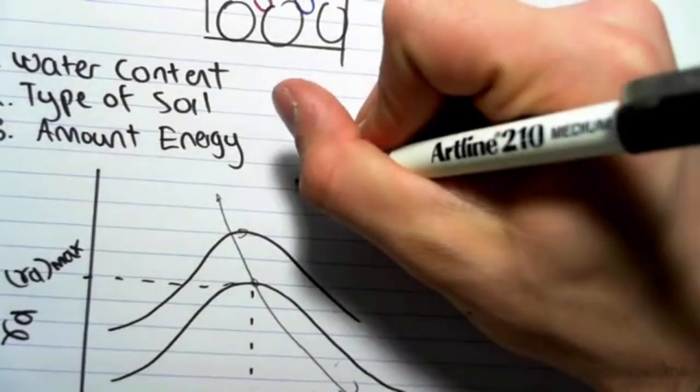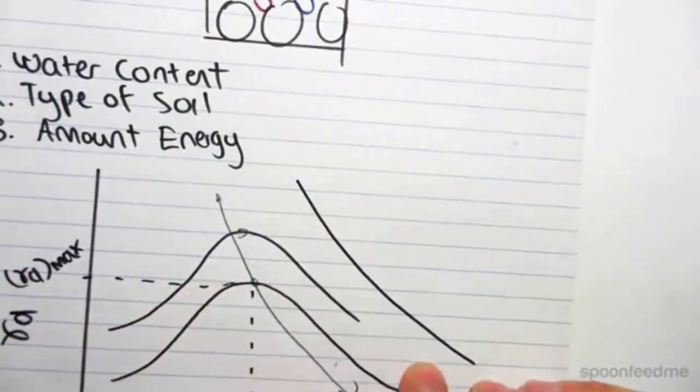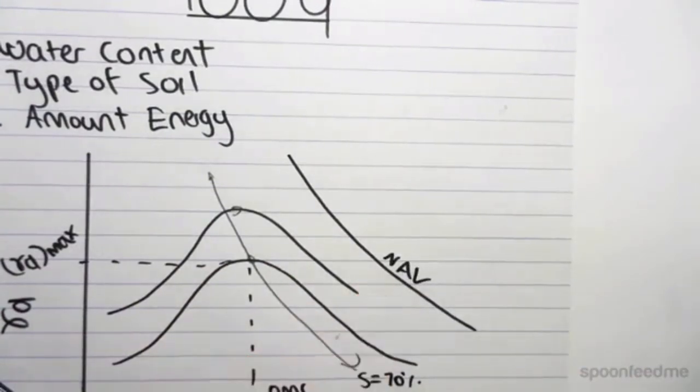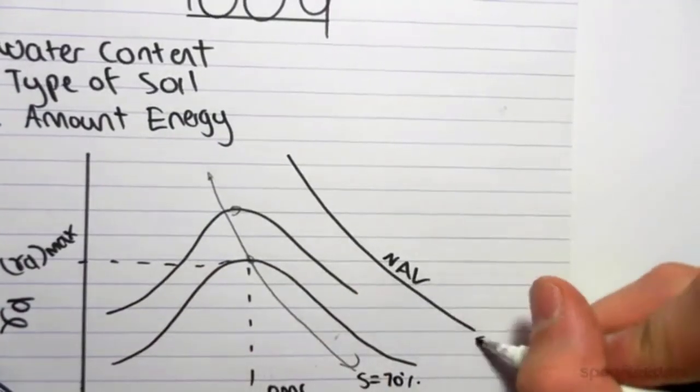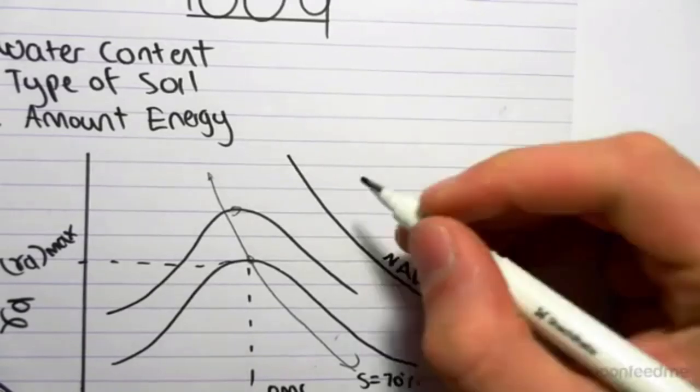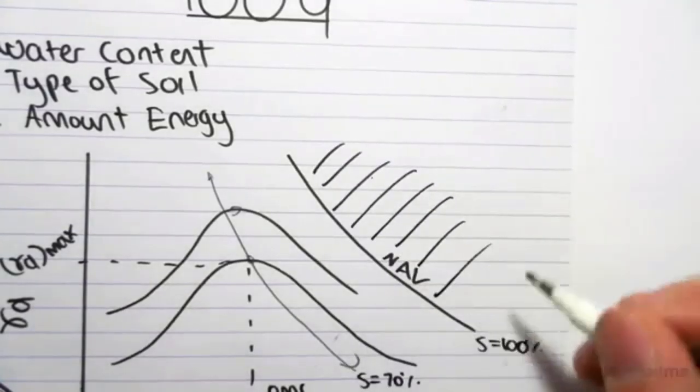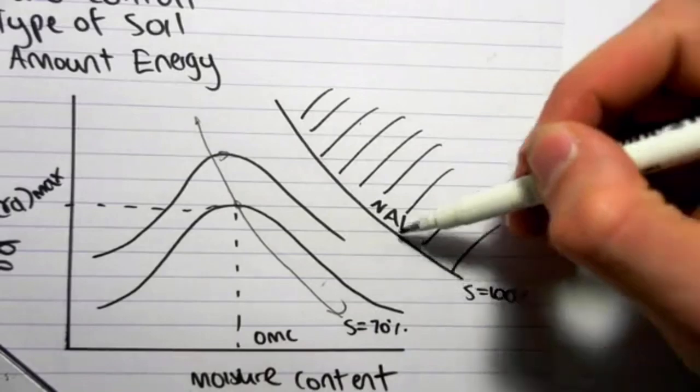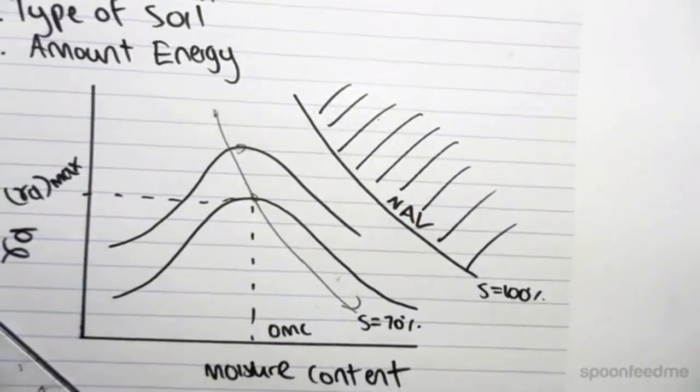Another important feature is that we get a point here, this line here, is the no air voids line, NAV, the no air voids line, whereby the saturation is 100%, and we can never enter this region. Think of this as like when your moisture content gets to 100%, it's like an asymptote, it's going to approach this value. And it's going to obviously shift, depending on how much energy we put into the system.